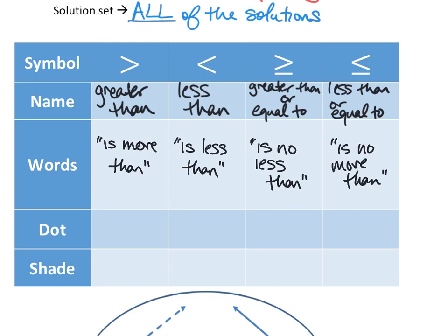We're also going to be graphing these on a number line. When we graph inequalities or solution sets on a number line, it's important to include a particular dot and shading. It has to do with the direction we're shading, whether numbers are bigger or smaller, and if it's inclusive or exclusive. The two symbols that have no 'or equal to' part — greater than and less than — use an open dot. They are exclusive symbols, which means we can't actually include the number we're talking about.